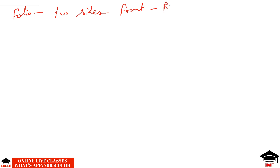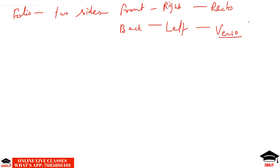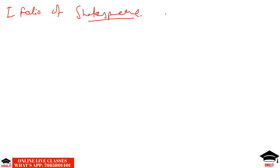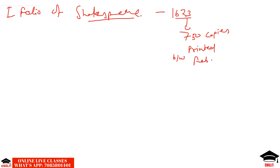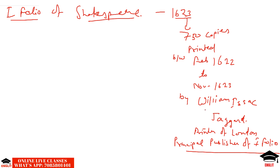The two leaves of each sheet have two sides: the front or right side is called recto, and the back or left side is called verso. Now, regarding the First Folio: it was first published in 1623, with approximately 750 copies printed between February 1622 and November 1623. It was printed by William Isaac Jaggard, a printer of London and principal publisher of the First Folio.